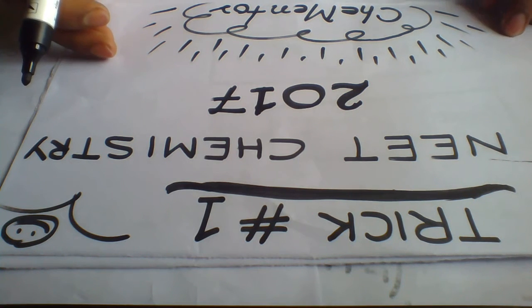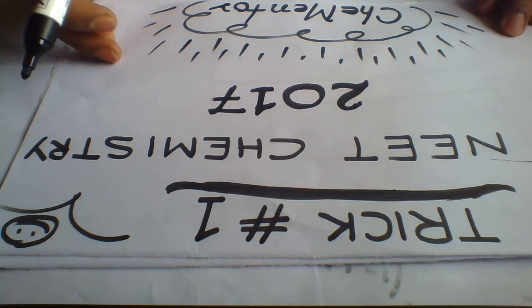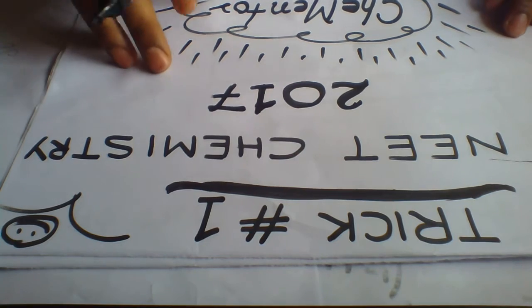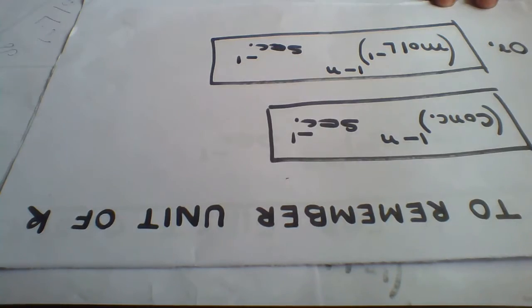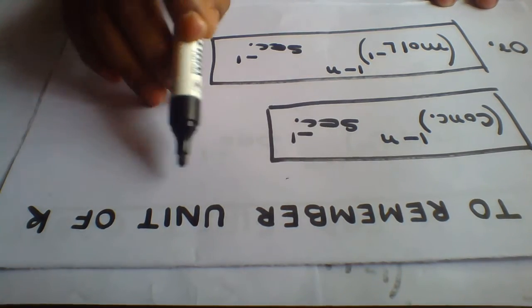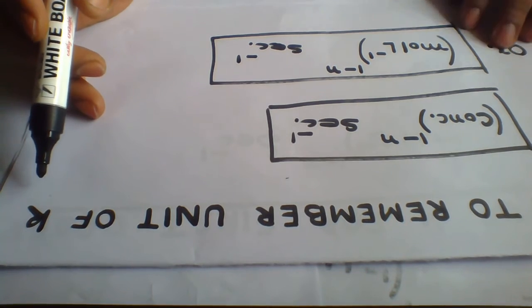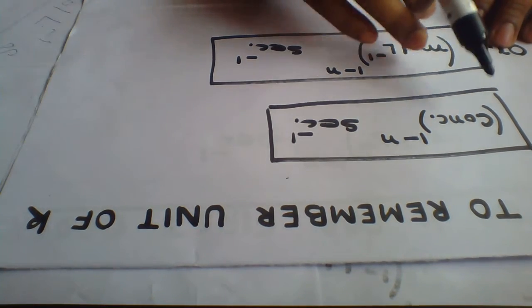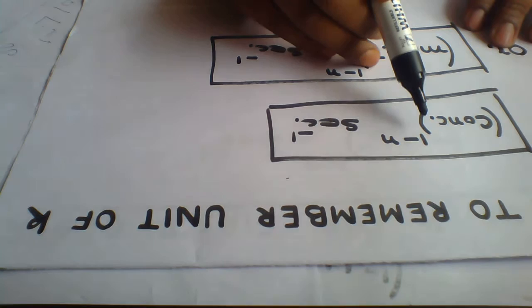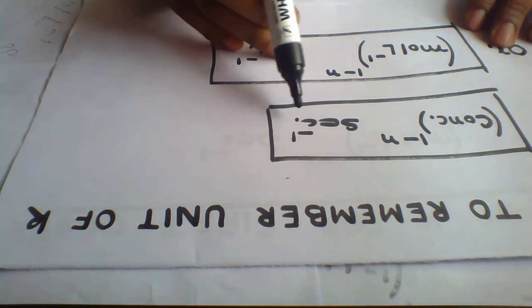Hello friends, welcome to Commenter. Today I'll be giving you one trick for the preparation of NEET Chemistry 2017. The trick to remember unit of rate constant: you simply have to remember this expression: concentration to the power 1 minus n, second inverse.